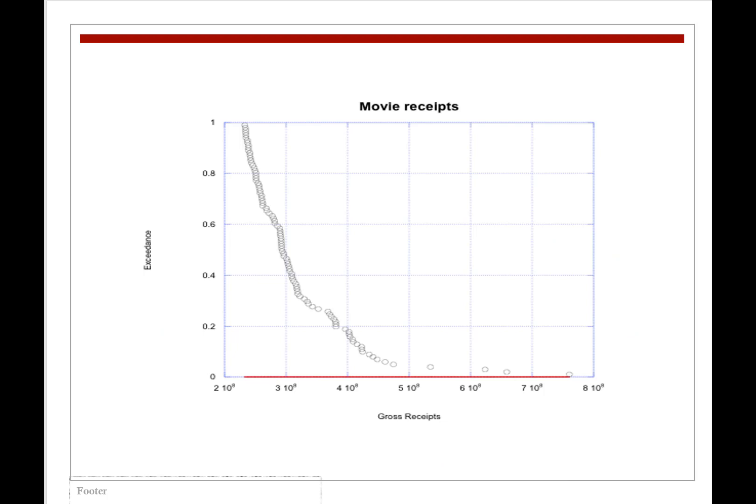For example, I went and gathered data on how many millions of dollars were earned for various movies. I collected data over a number of years and I plotted, I ranked that data and plotted the exceedance as a function of gross receipts and we get a really nice relationship and this thing is called a power law. This is a power law relationship that relates the exceedance probability to the magnitude of the event raised to some power and we use the exponent q to represent that curve.